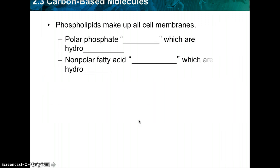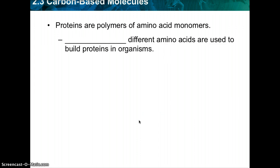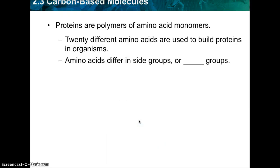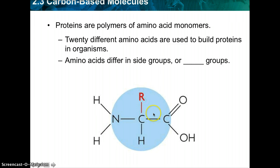Okay, so we're going to go back to proteins are polymers of amino acid monomers. And so there's 20 different amino acids that are used to build proteins in organisms. I'm not going to ask you to memorize all 20 of the various amino acids, so don't worry about that. What you do need to know is that they differ in their side groups or their R groups. There's always an R group on an amino acid, and that's what changes from one amino acid to another.